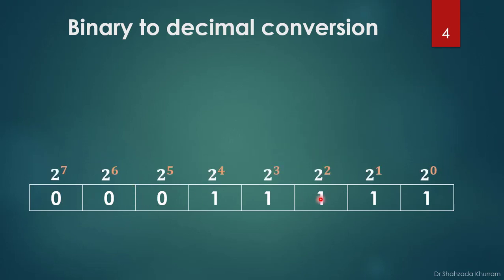Here is one octet — one byte — and these are the bits within this octet. We start converting each bit using powers of 2. From right to left, the positions are 2 to the power 0, 1, 2, 3, 4, 5, 6, and 7.